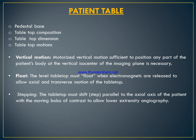Patient tables are used primarily for patient comfort during examination and are made of carbon fiber. The table has vertical motion, float, and stepping features. It has a pedestal base with diamond tabletop dimensions. Motorized vertical motion is sufficient to position any part of the patient's body at the vertical isocenter of the imaging plane. The level tabletop must float when electromagnets are released to allow axial and transverse motion.